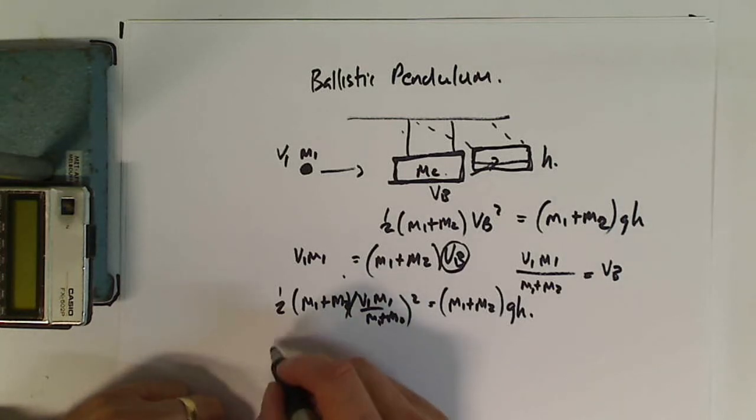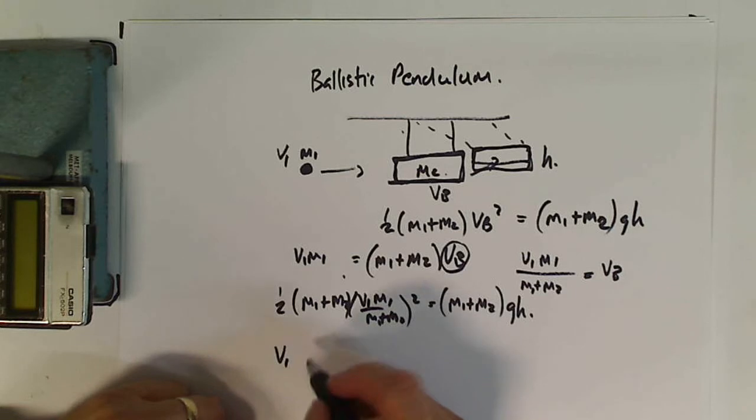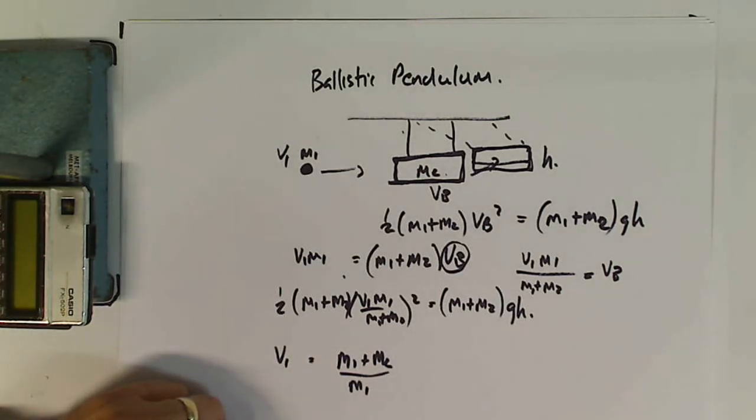And it's something I'd like you to do—do the actual algebra. v1 is going to be equal to (m1 plus m2) all over m1 times the square root of 2gh. So that's it.